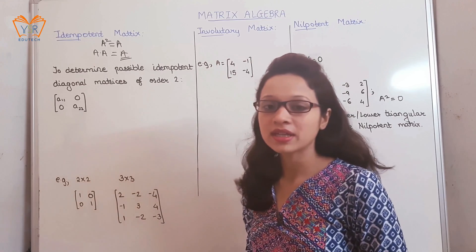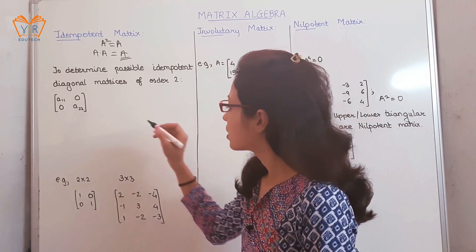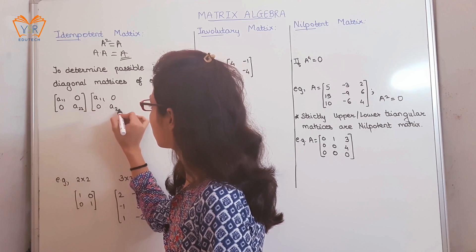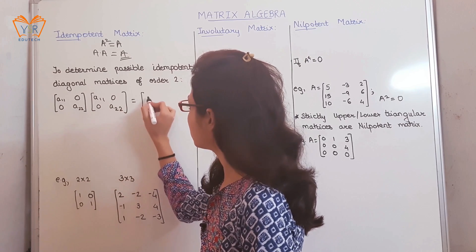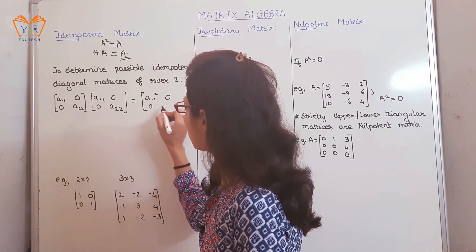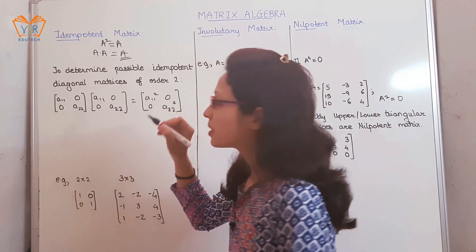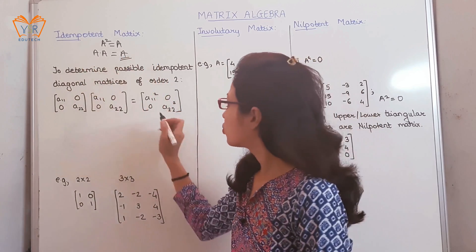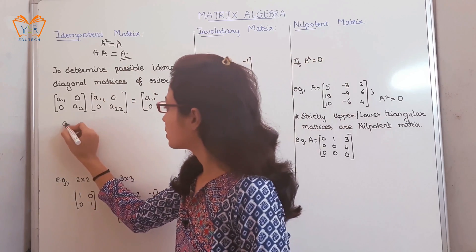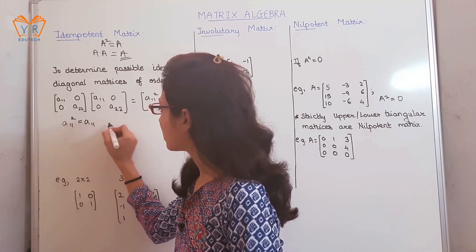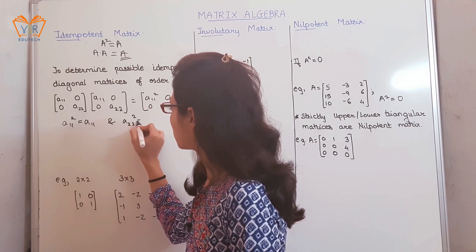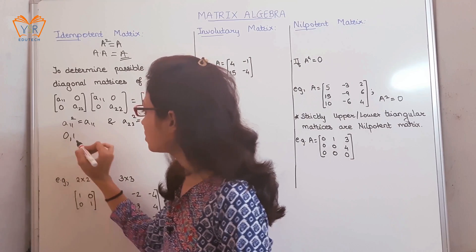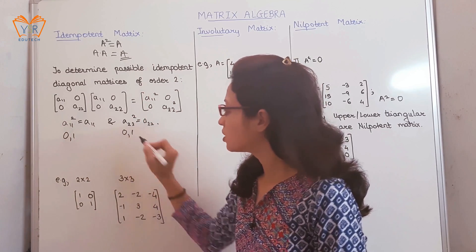Let us determine the possible idempotent diagonal matrices for an order-2 matrix. When this diagonal matrix is multiplied by itself, the result is a diagonal matrix with elements A₁₁ squared and A₂₂ squared. But the definition says the result should be the same matrix, so we need A₁₁ squared equal to A₁₁ and A₂₂ squared equal to A₂₂.